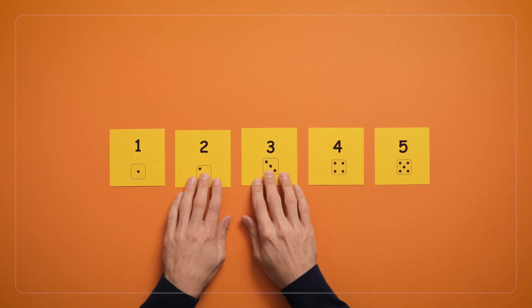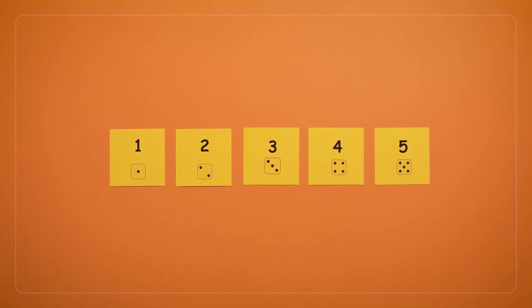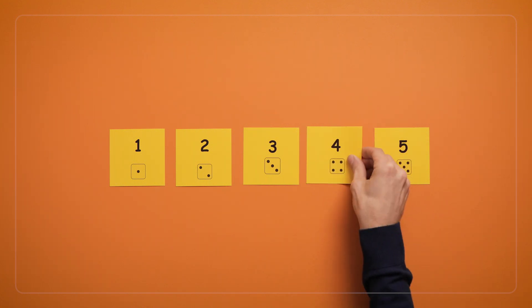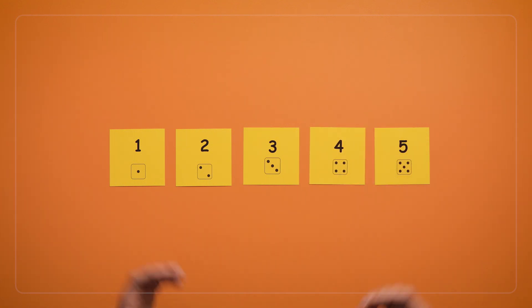For an extra challenge, once the cards are in order, you can ask children to close their eyes while you remove one of the cards. See if they can figure out which card is missing, and then ask them, how did you know which card I took out?